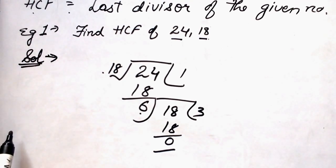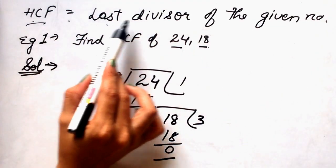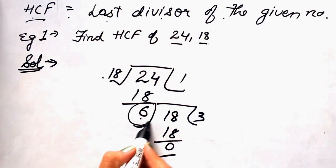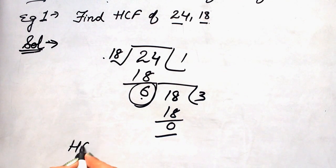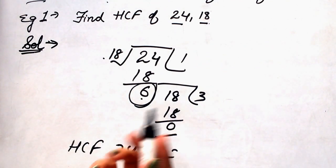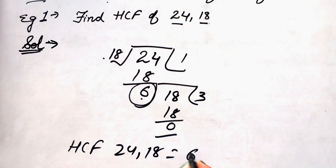As we have told above that HCF is last divisor of the given number. So, here we have 6 as the last divisor. So, HCF for 24 and 18 by successive division method is 6.